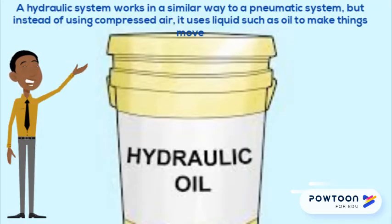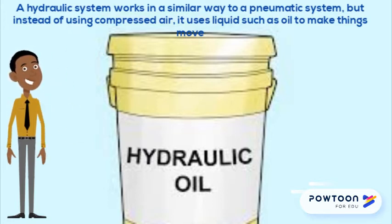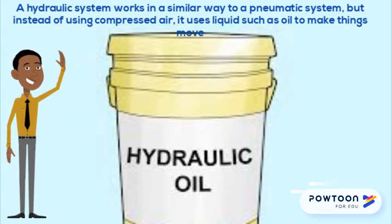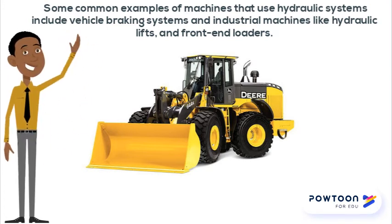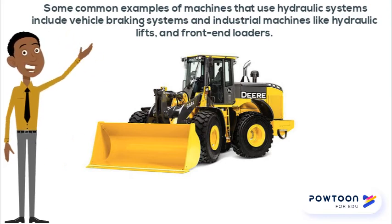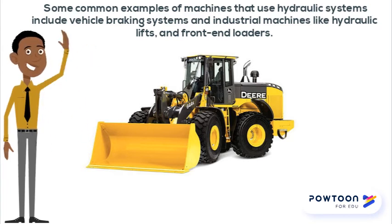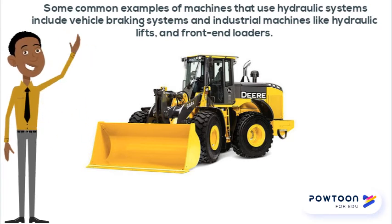A hydraulic system works in a similar way to a pneumatic system, but instead of using compressed air, it uses liquid such as oil to make things move. Hydraulic systems use liquids in cylinders to change small forces into large forces to provide mechanical advantage. Some common examples of machines that use hydraulic systems include vehicle braking systems and industrial machines like hydraulic lifts and front-end loaders.